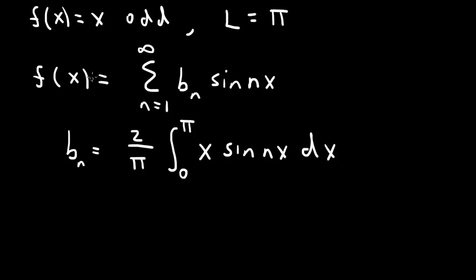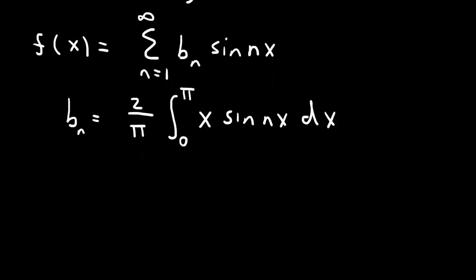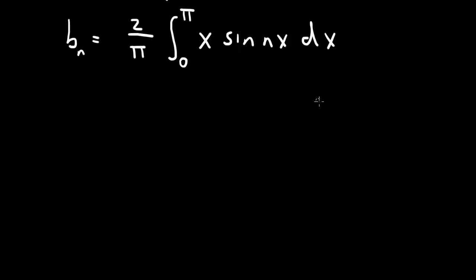So the only thing left to do, then, is to do these integrals to compute b sub n. So let's do that. We want to integrate by parts. We want to get rid of the x.